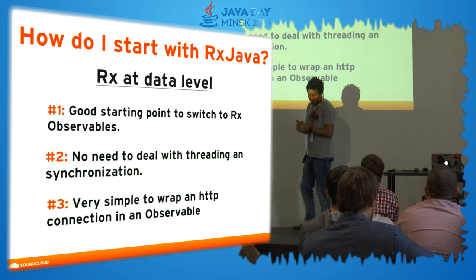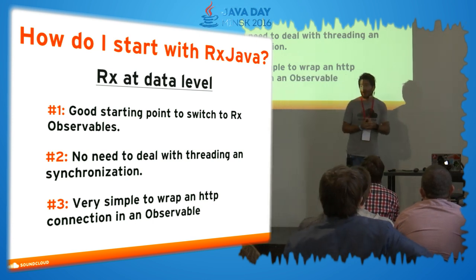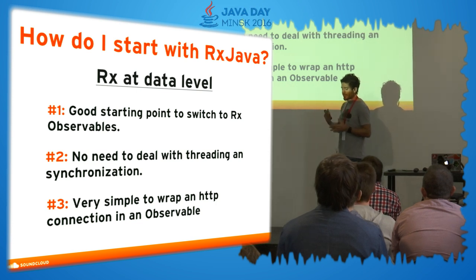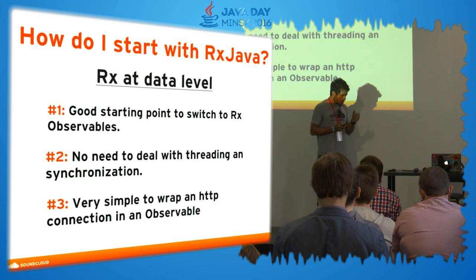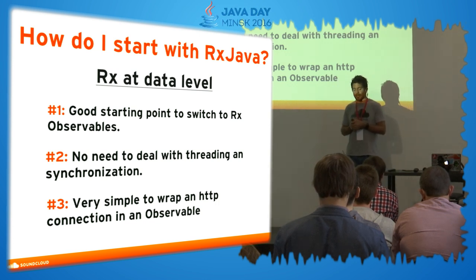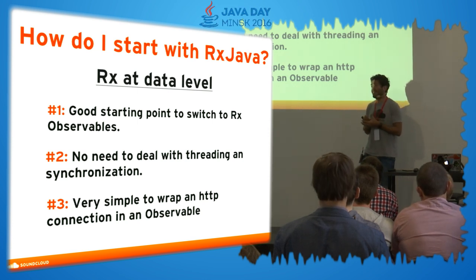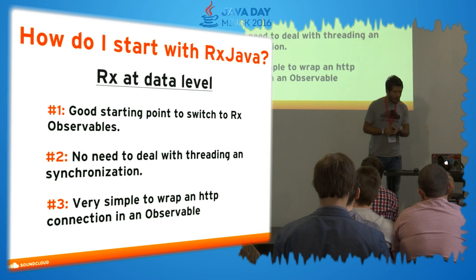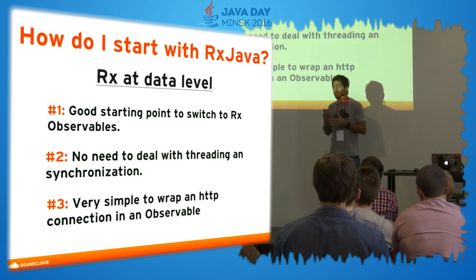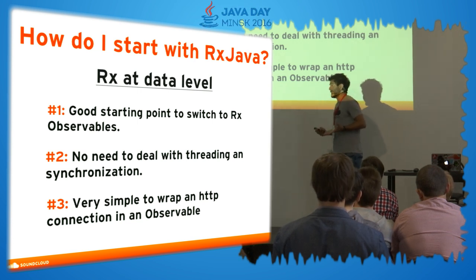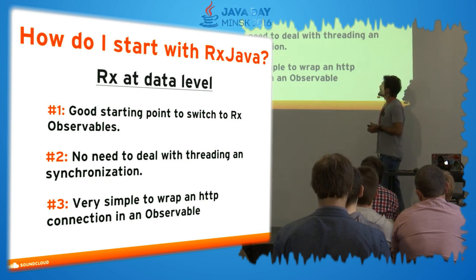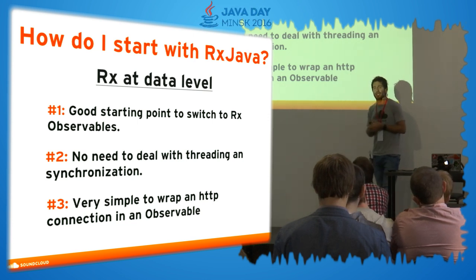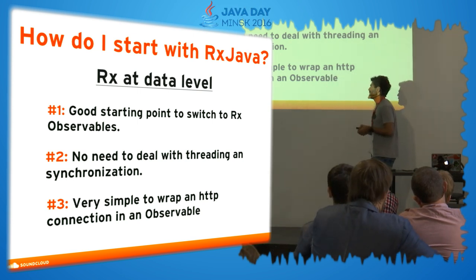To wrap up — if we have a current solution and want to start with RxJava, I would suggest starting with your data level, because you can turn your SQL queries into observables in a very easy way. At that point you might not need any synchronization because you're already executing in a separate thread. It's also pretty easy to wrap an HTTP connection in an observable — RxJava provides very useful methods for that.